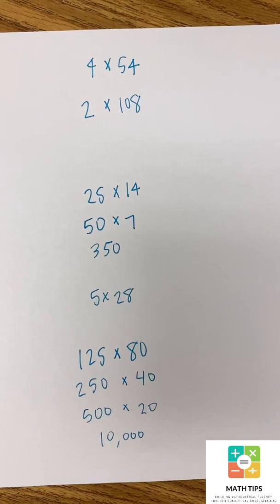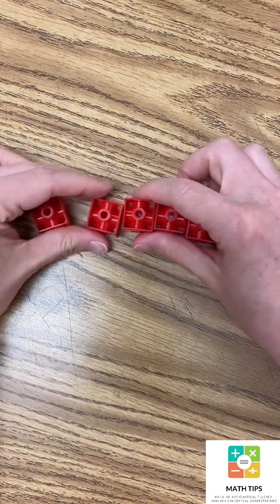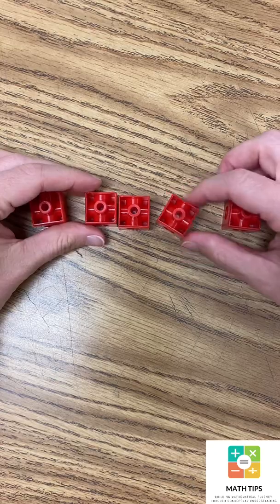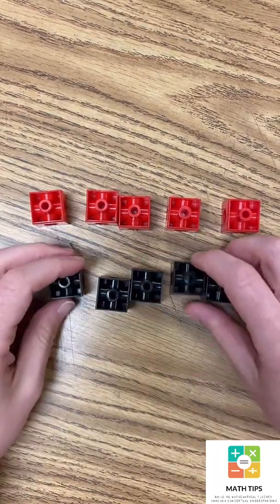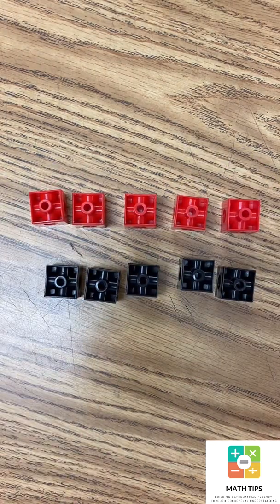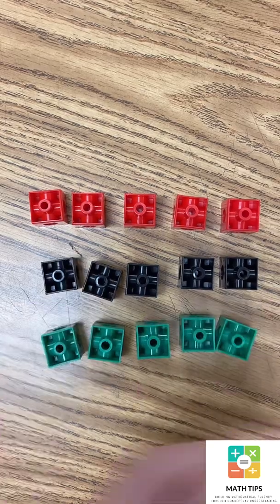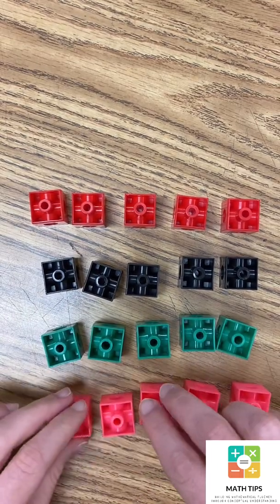Now an important part of this double and half strategy is the understanding behind it. Because we don't want to just tell our students how to do something. We want them to understand why it works. So let's just take a smaller multiplication problem for the moment so that we can illustrate this. Let's say that we have 4 times 5. I'm going to show you this with an array. So let's say that we have 4 groups of 5.